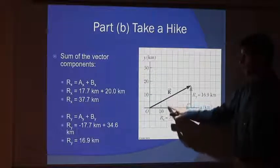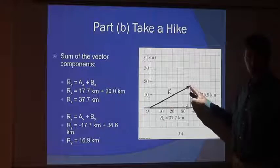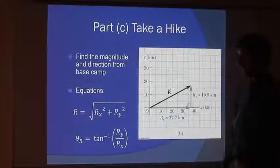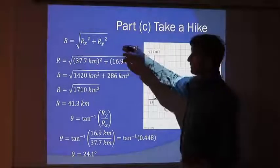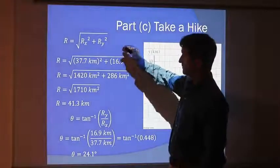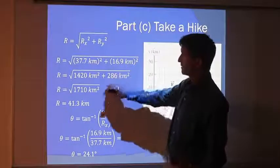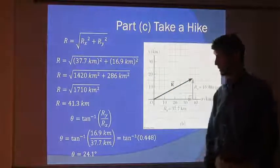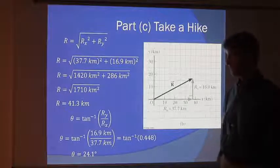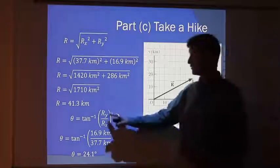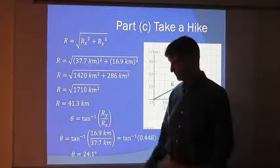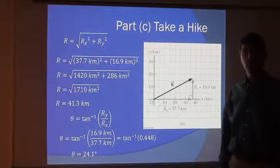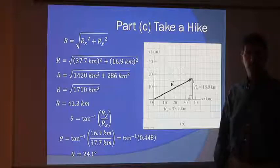What if I ask the question, where did I end up with respect to the origin in terms of north, south, east, west? I use inverse tangent for that. So here are my x and y components. I square them, take the square root of their sum, and I see that I've traveled a total displacement of 41.3 kilometers. In terms of the angle, the angle is the y component divided by the x component, inverse tangent. I've traveled 24.1 degrees north of east. Very simple.